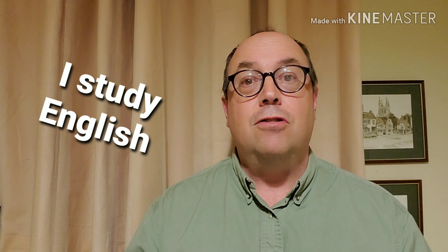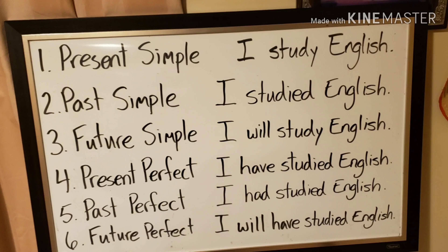The first tense I want to talk about is the present simple — sometimes people call it the simple present, same thing. For our example, I'm going to use the sentence, 'I study English.' We use the present simple to talk about something that you do that's a habit or that's the truth. You could also say something like, 'I am a student.' That's also the present simple. Here's the example on the whiteboard: number one says, 'I study English.' That is the present simple. That's a basic example.